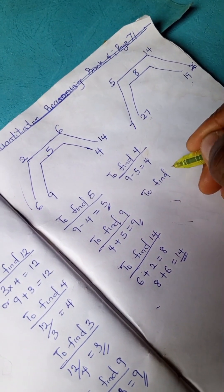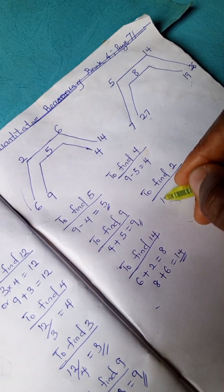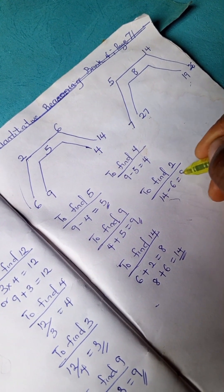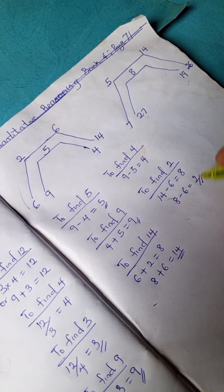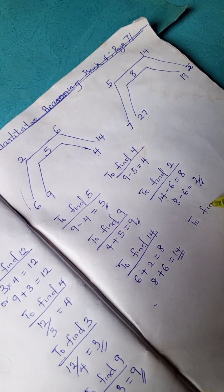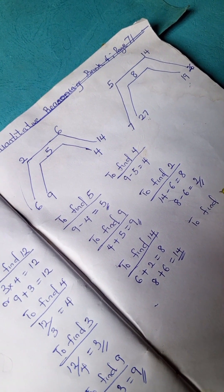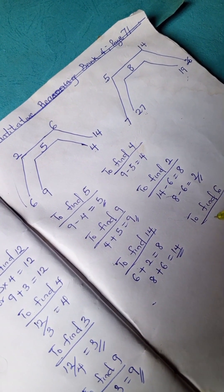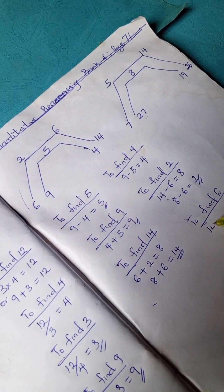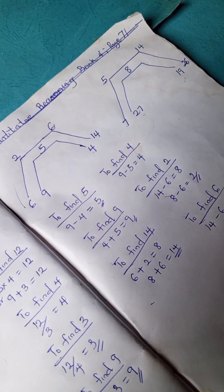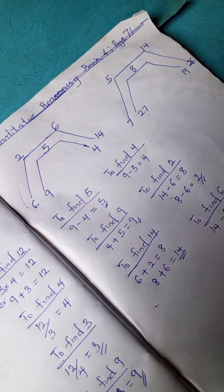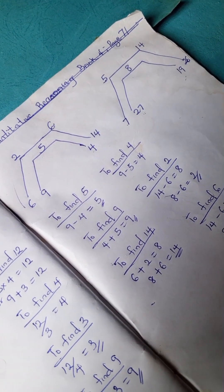To find 2, we would have 14 minus 6 is 8, so 8 minus 6 is 2. To find 6, we would have 14 minus 6 equals 8, and 8 minus 2 is 6.